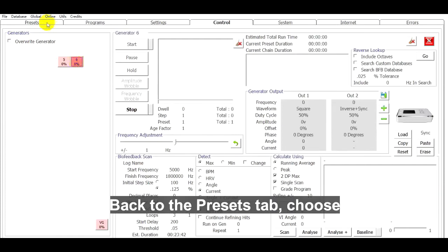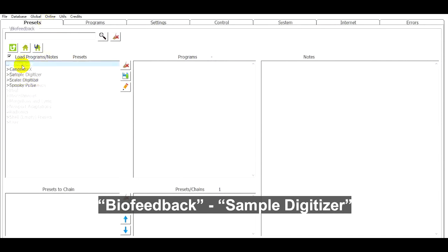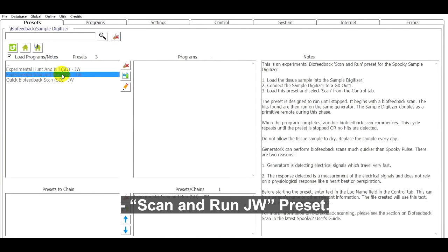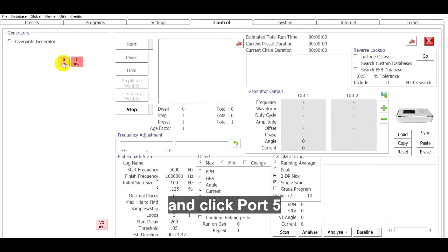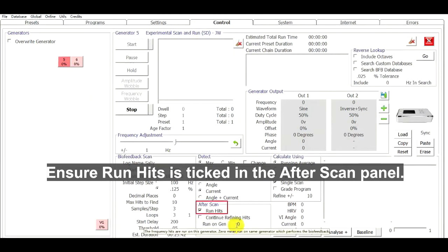Back to the Presets tab, choose Biofeedback - Sample Digitizer - Scan and Run JW preset. Then go to the Control tab, tick Overwrite Generators and click port 5 which is connected to the sample digitizer. Ensure Run Hits is ticked in the After Scan panel.